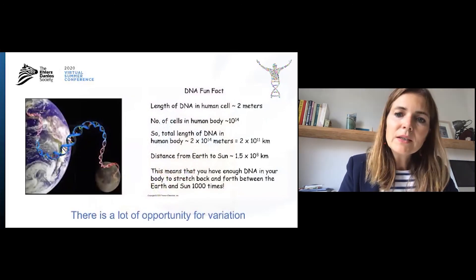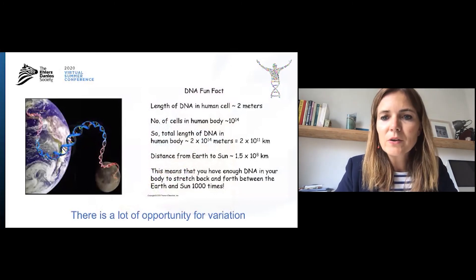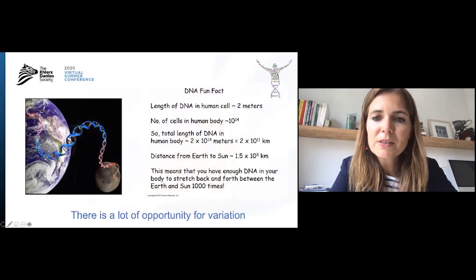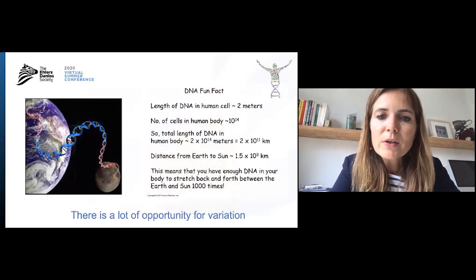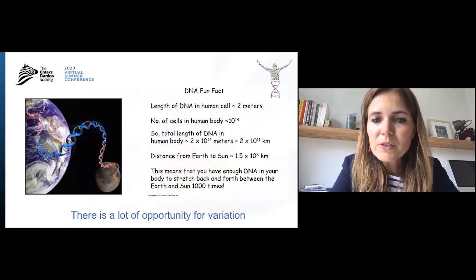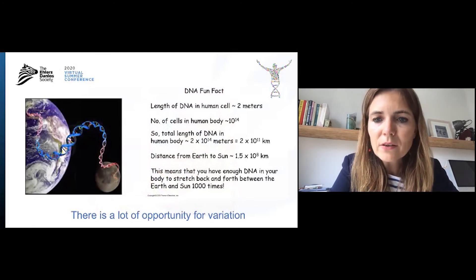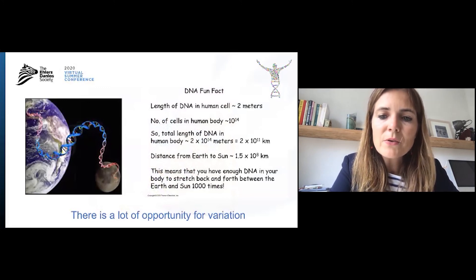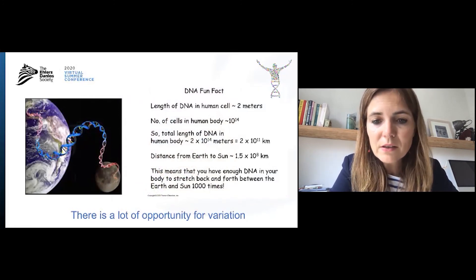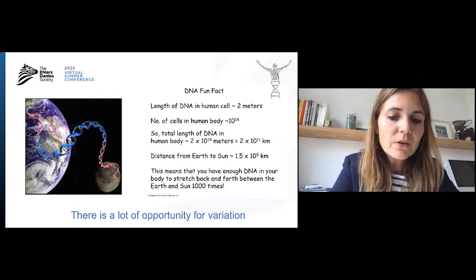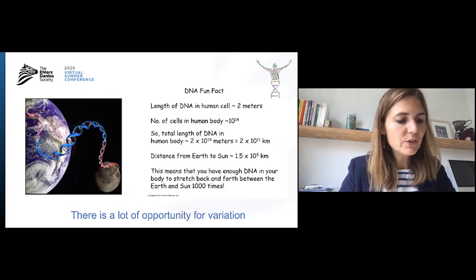Here are a few fun facts about our DNA. The length of DNA in each human cell is about two meters. So if you know the number of cells in the human body, you can calculate the total length of DNA in the human body. This means that you have enough DNA in your body to stretch back and forth between the earth and the sun a thousand times. So you can imagine that there is a lot of opportunity for variation in our DNA.